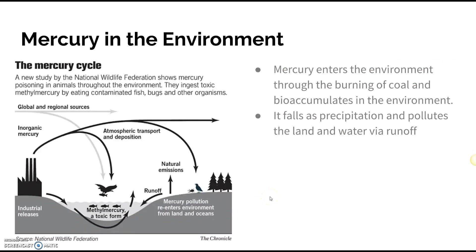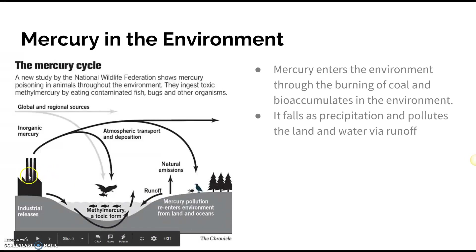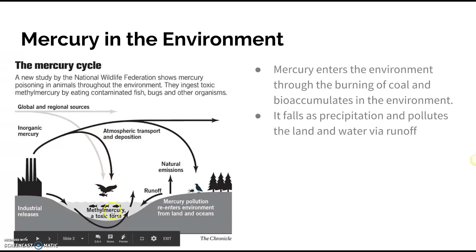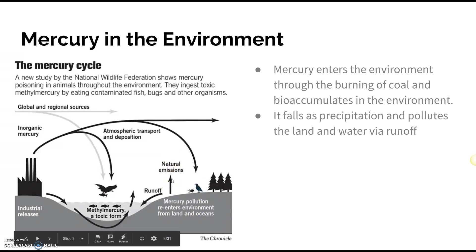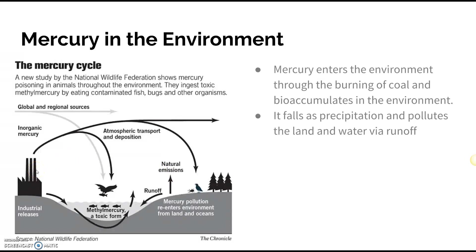Looking at the diagram, most of our inorganic mercury is released through the burning of fossil fuels. It goes into the atmosphere where it can either fall into our waterways or fall onto the ground and go through runoff. It can also be infiltrated into the ground, and there are natural emissions where it can re-enter the environment from land and ocean. The key point is that it comes through the burning of fossil fuels, mixes with atmospheric water, and then follows some type of precipitation.